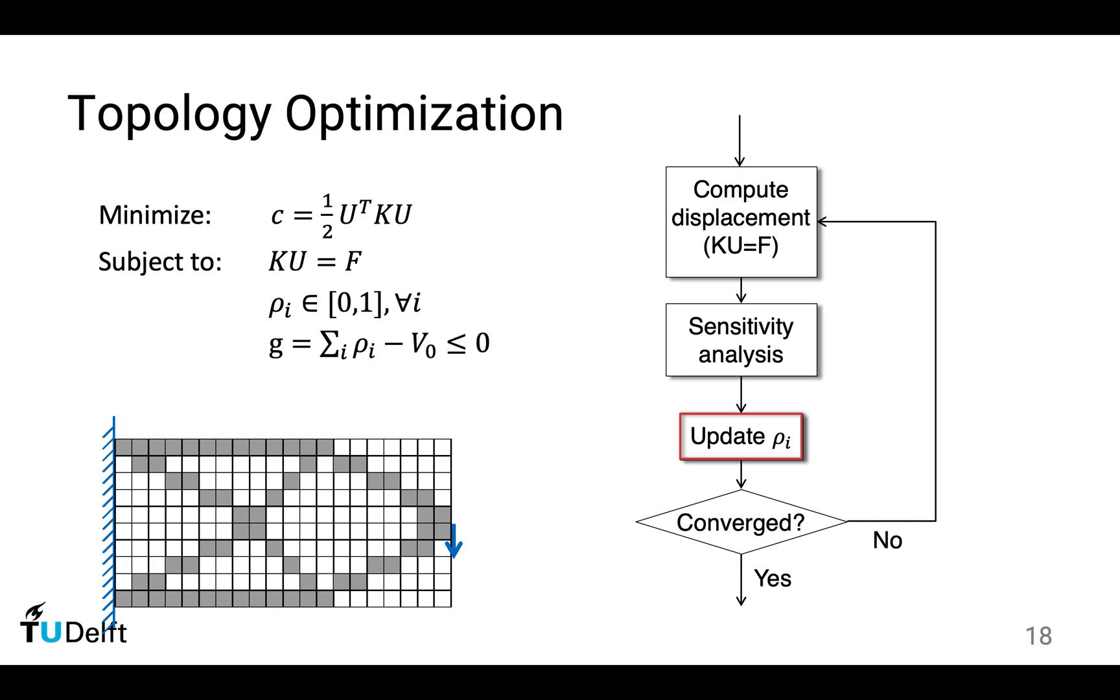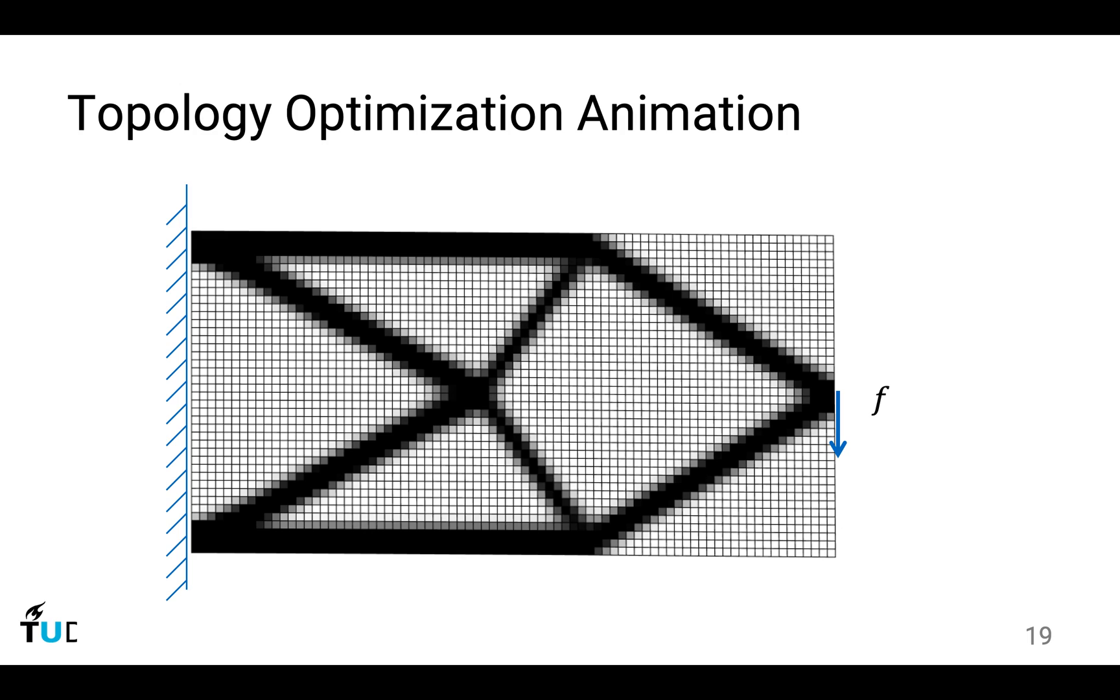This is the principle behind, and this is the mathematical description of the problem. On the right hand side is how this problem is solved in a computer. Now we have this understanding of the mathematics and the principle, we look at this animation again. When we look at this animation, please think about this mechanical analysis to simulate the displacement. From the displacement, we evaluate how important each element is based on its importance and redistribute material. Think about this when we watch this animation again.